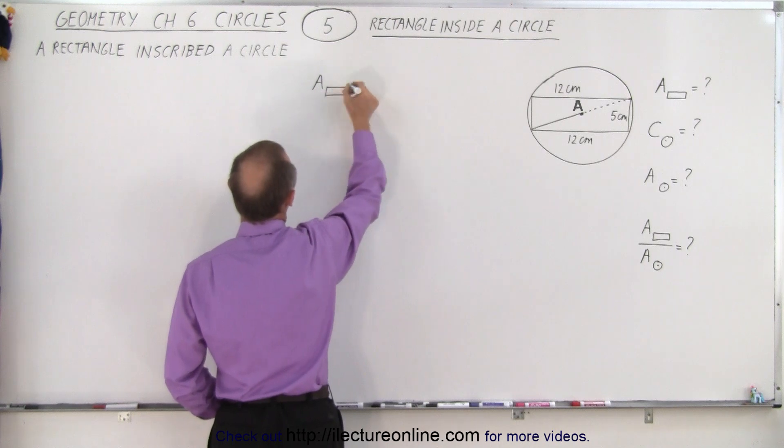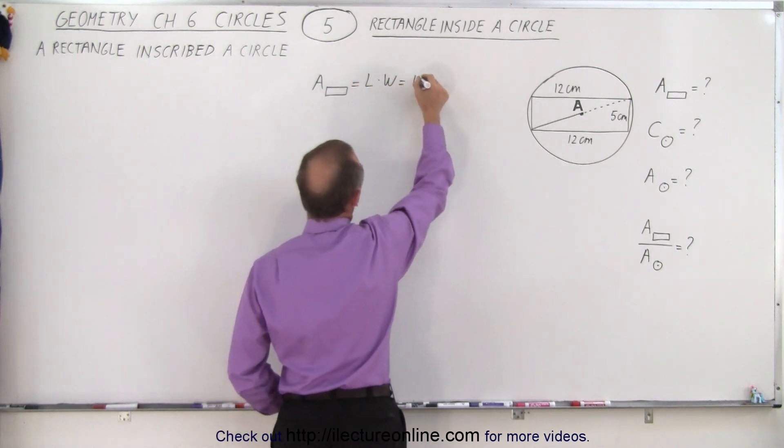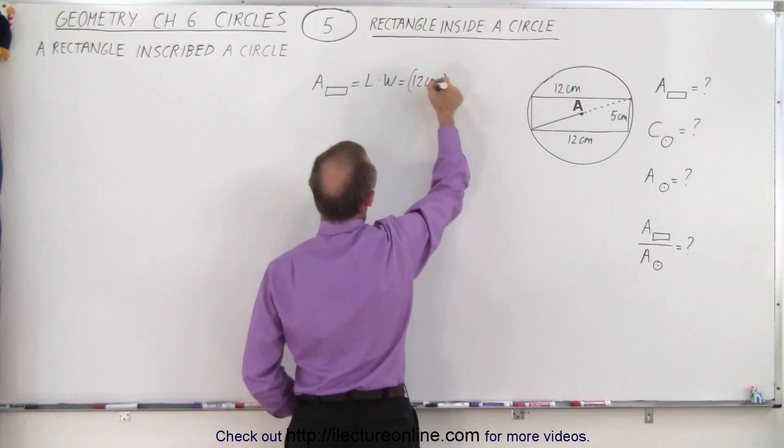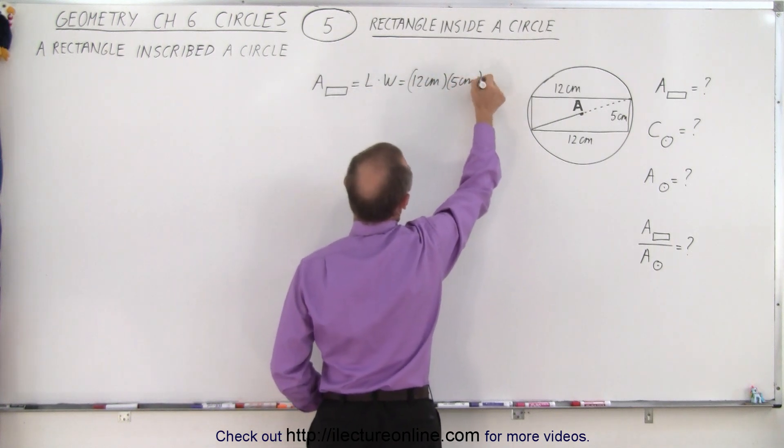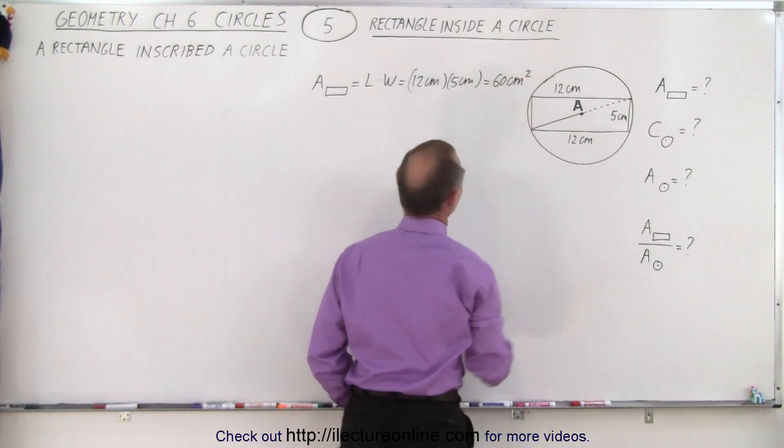So the area of the rectangle is equal to the length times the width, and the length would be 12 centimeters, and the width would be 5 centimeters, so you can see that the area is 60 centimeters squared. So that was easy.